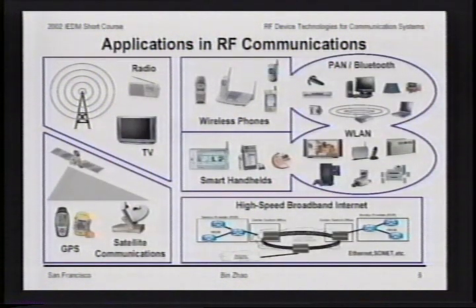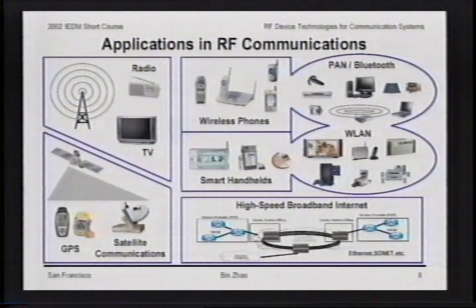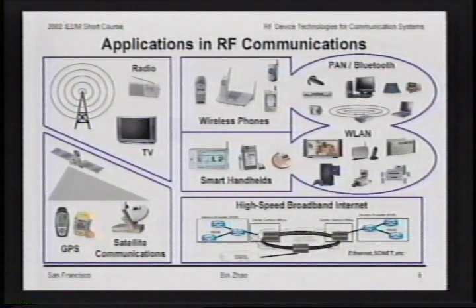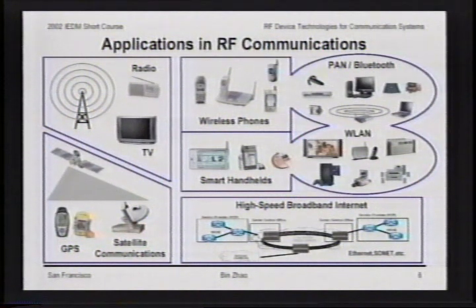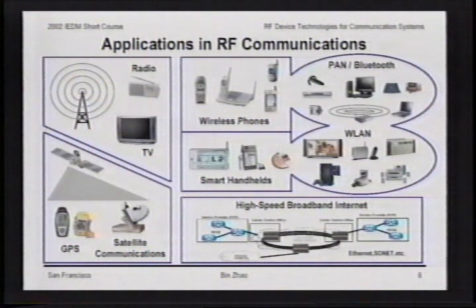The broadband RF technology has led to explosive deployment of high-speed internet in the past several years. For narrow band RF communications, in addition to traditional radio and TV broadcasting, many exciting applications have emerged in bidirectional and interactive wireless communications, including GPS (global positioning system), satellite communications, wireless phone, Bluetooth (a personal area network solution), wireless LAN (the last mile extension of the internet), and smart handheld devices.